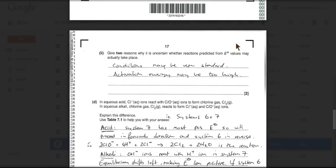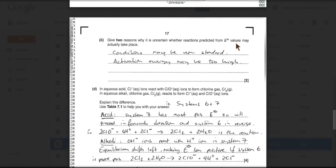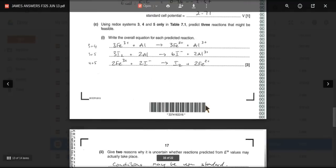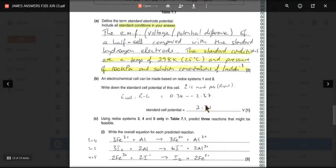And then quite a nasty part of the question coming up now. In aqueous acid, chlorate ions react with chloride ions to form chlorine. In aqueous alkali, chlorine gas reacts to form chloride and chlorate. So it's talking about systems 6 and 7. So I'll just go back up to the table and deal with the two conditions first of all.